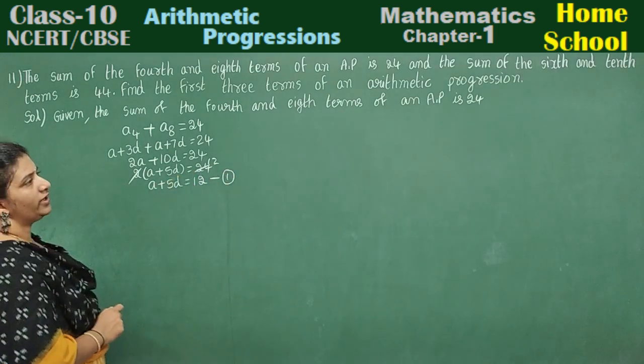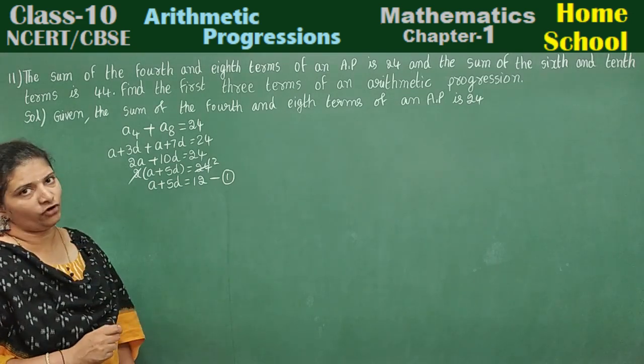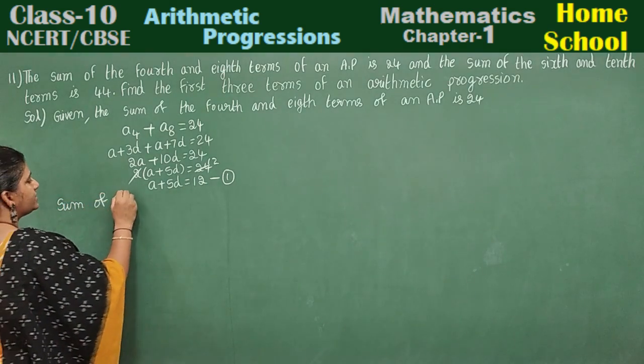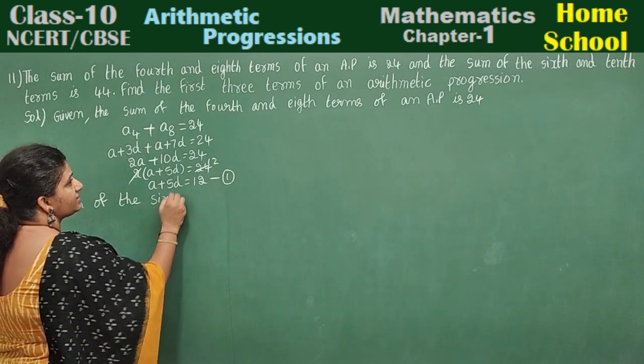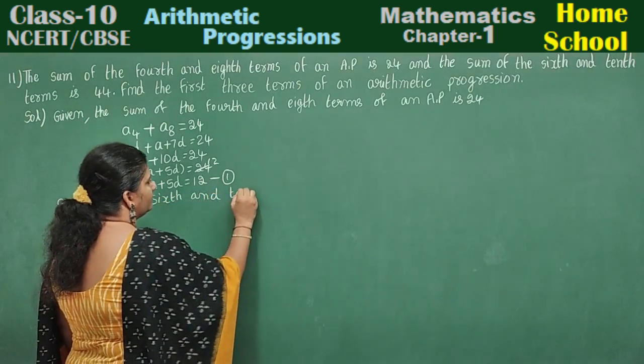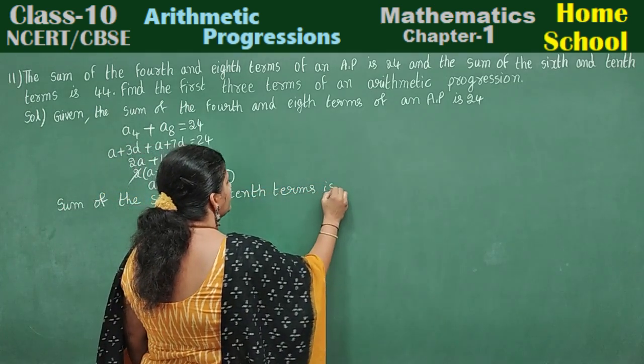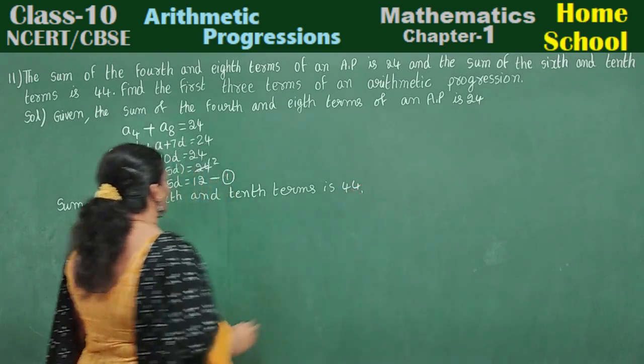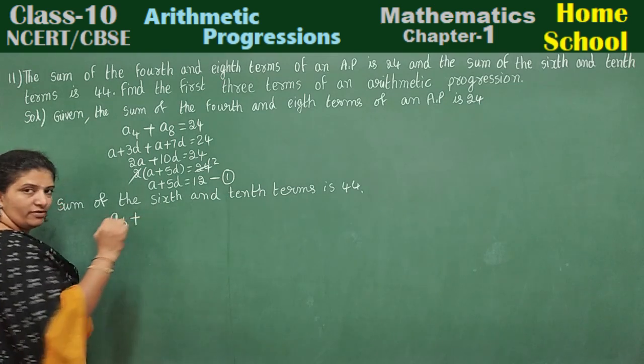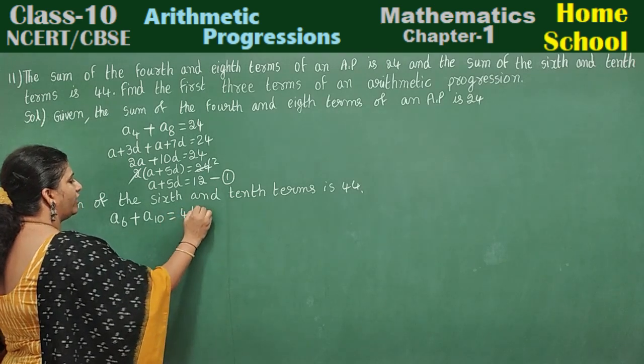Let's read the second point. Sum of the sixth and tenth terms is 44. Sum of sixth term A6 plus tenth term A10 is equal to 44.